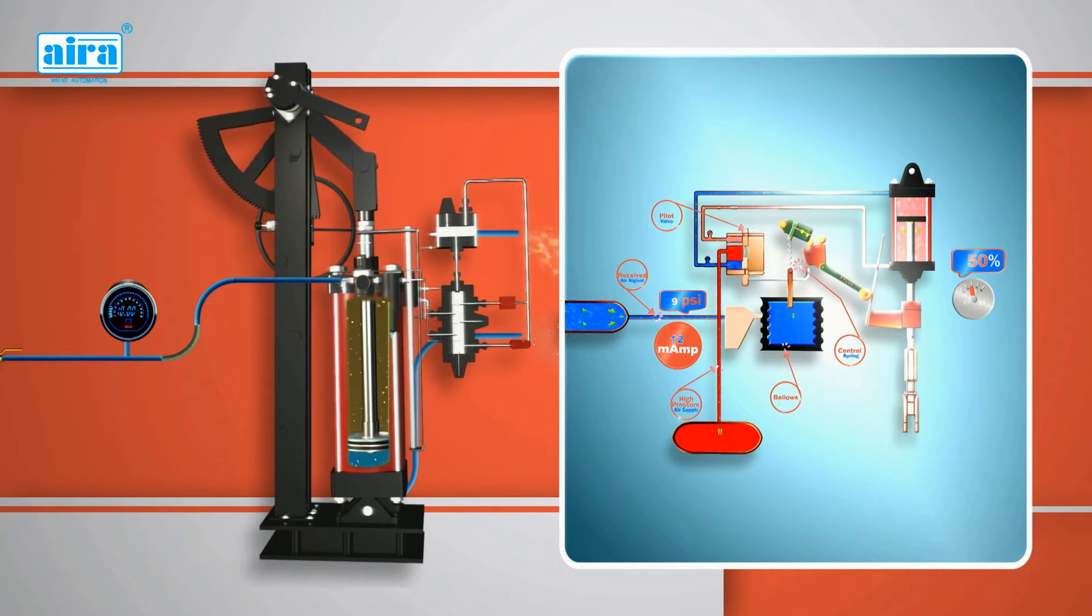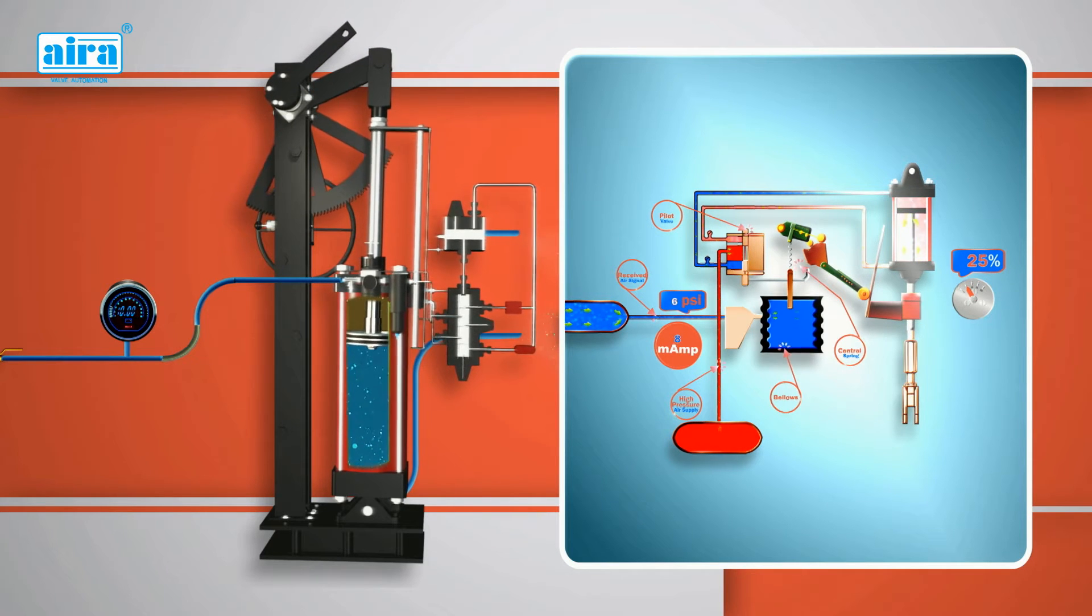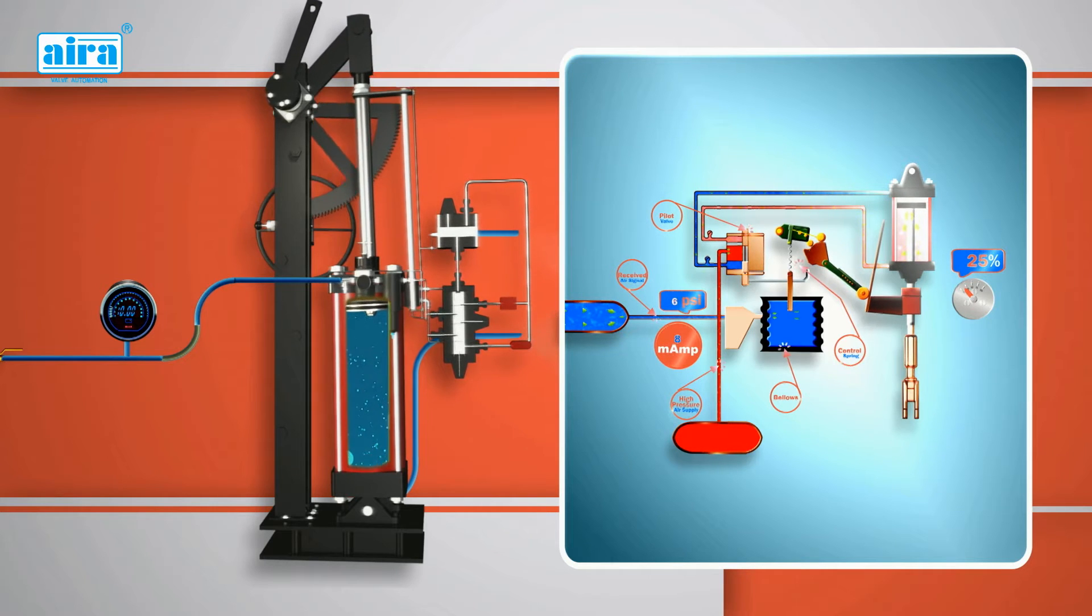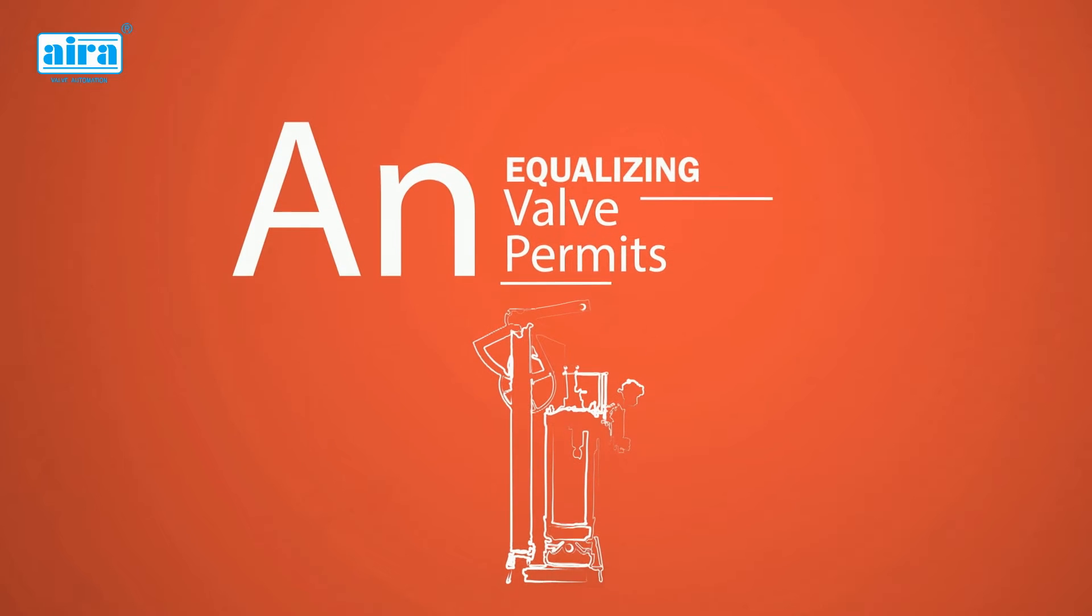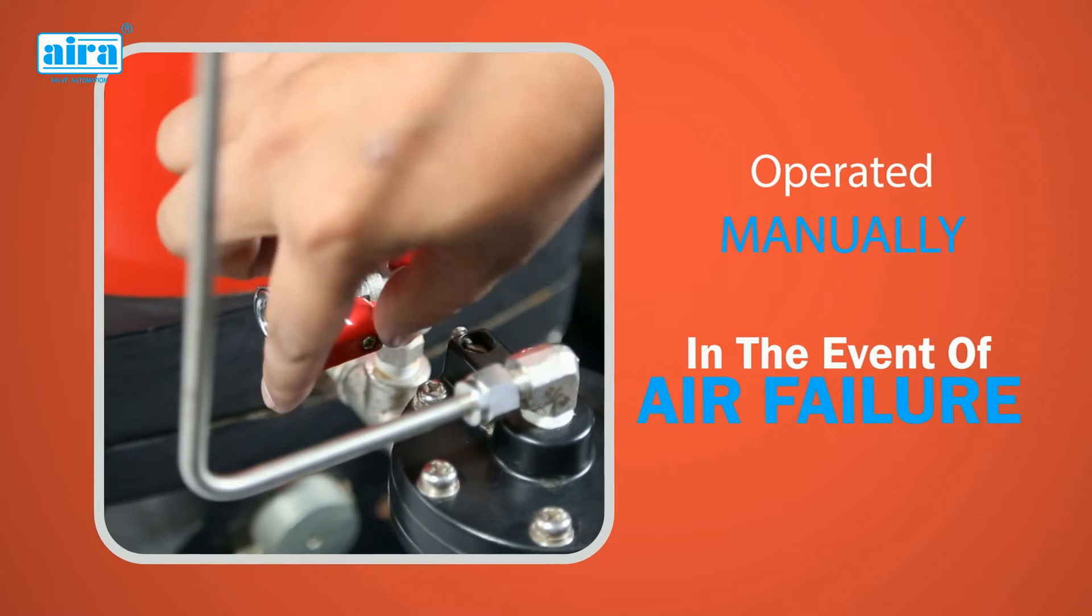The pilot valve is then closed and the piston comes to rest in its new position. Cams can be supplied to give either a linear or logarithmic relationship between the control signal and piston position. An equalizing valve permits the power cylinder to be operated manually in the event of air failure.